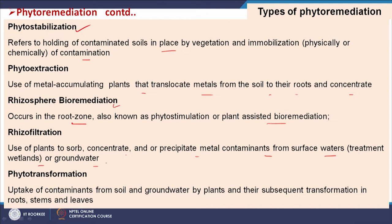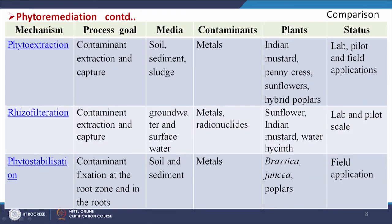Rhizofiltration is the use of plants to dissolve, concentrate and/or precipitate metal contaminants from surface waters, treatment wetlands or groundwater. Phytotransformation is the uptake of contaminants from soil and groundwater by plants and their subsequent transformation in the roots, stems and leaves. These are the different types of phytoremediation methods.